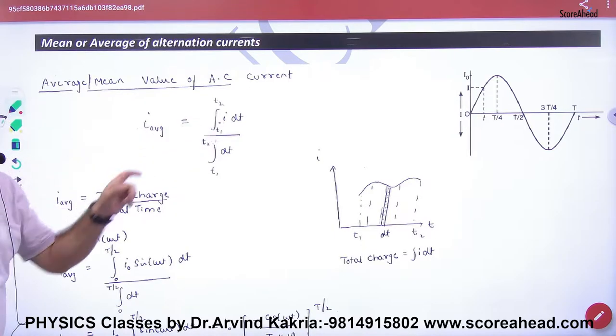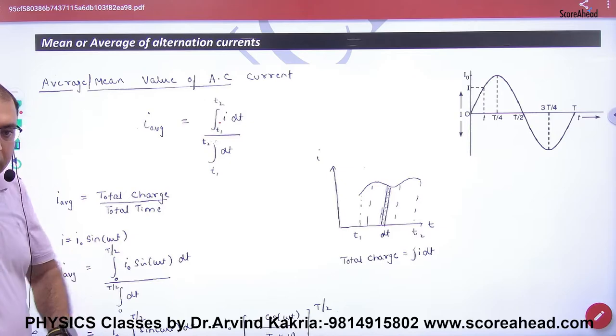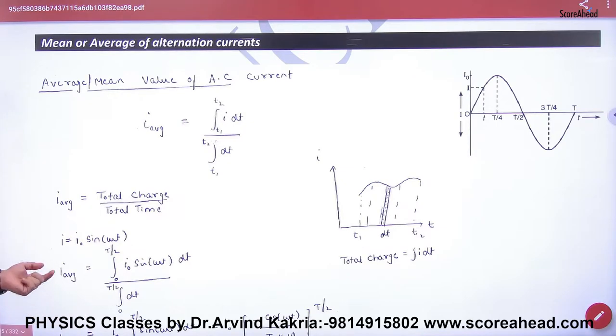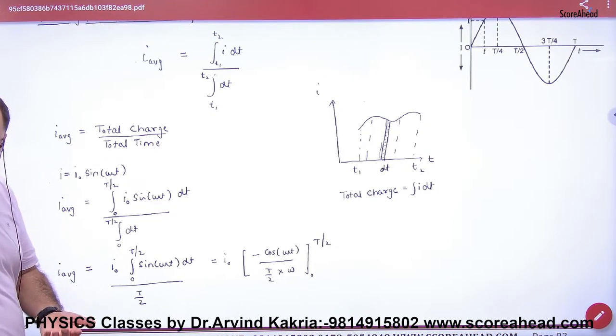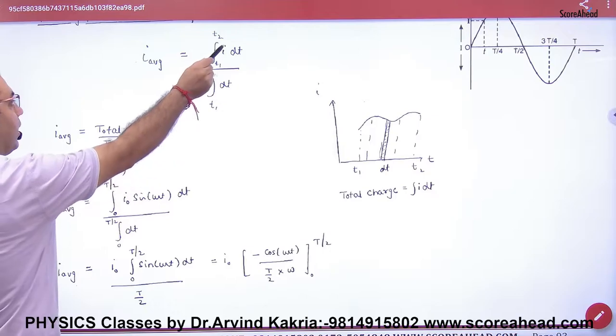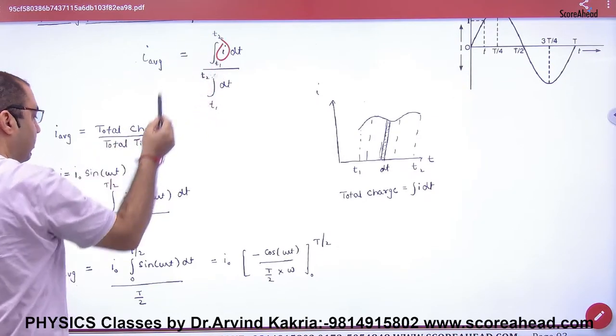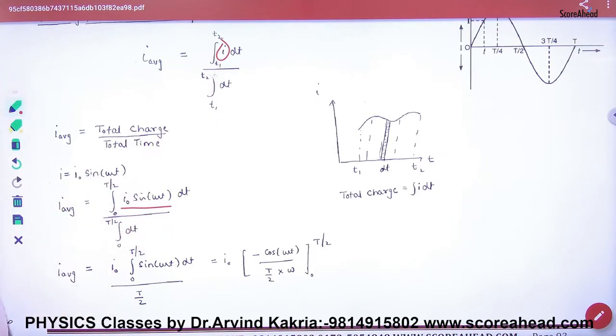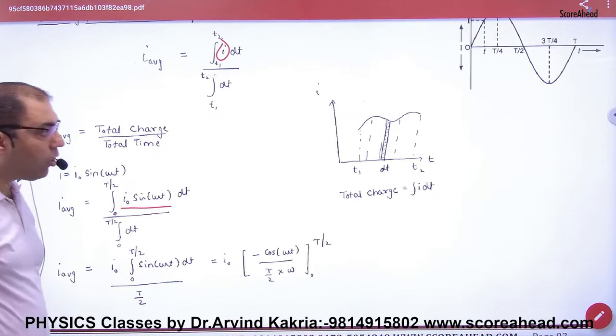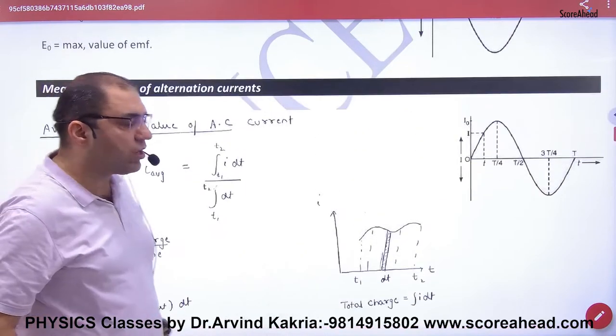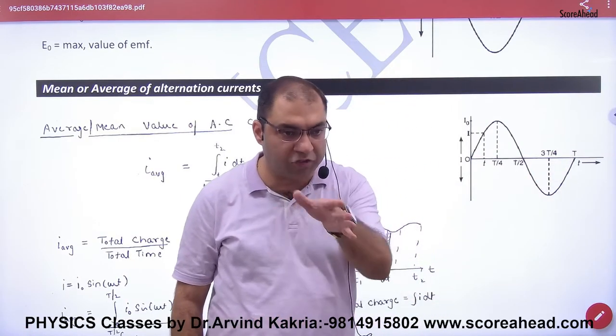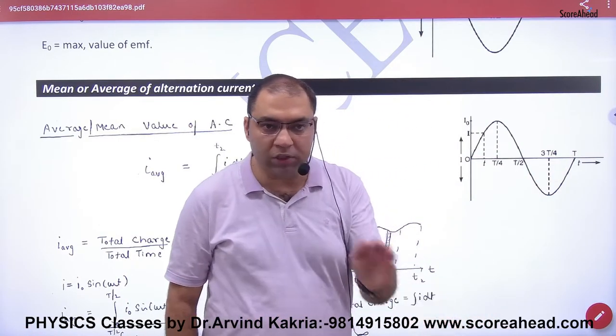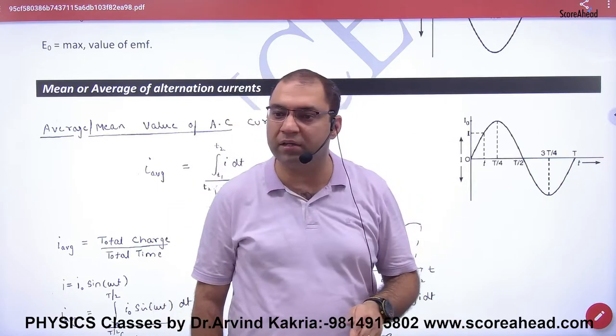Instantaneous current I is given by I not sine omega t. So to calculate average value, I will put I not sine omega t. Then the problem is that if we take average current over a complete cycle, AC has a positive cycle and a negative cycle. And when we take average current, the net answer will be zero.